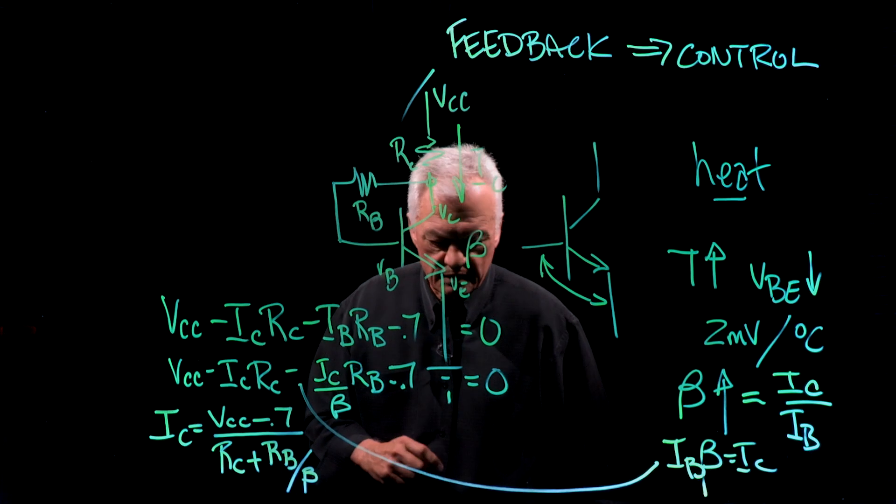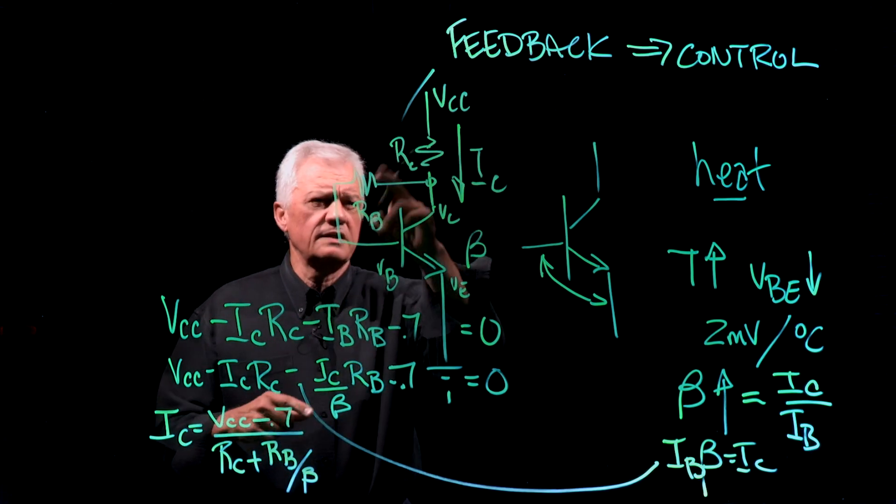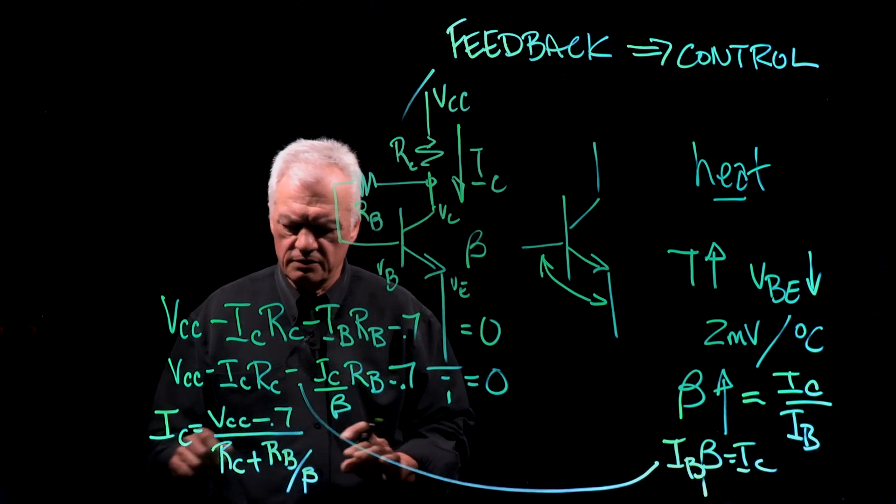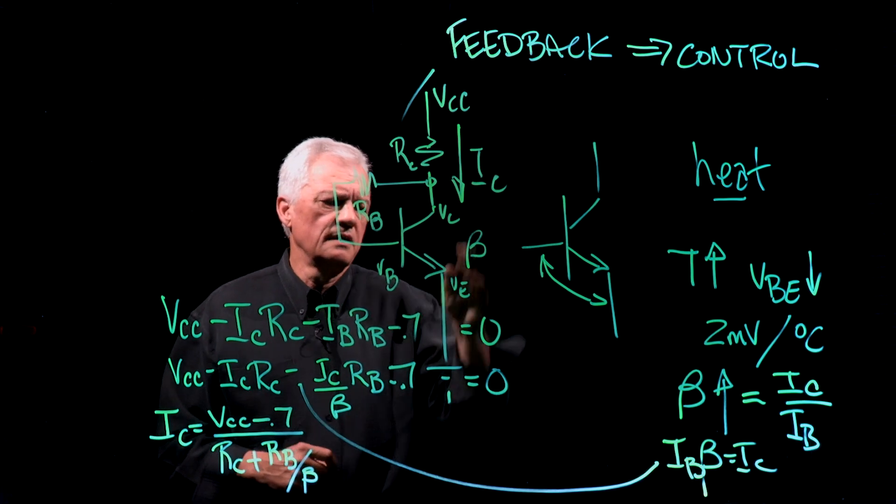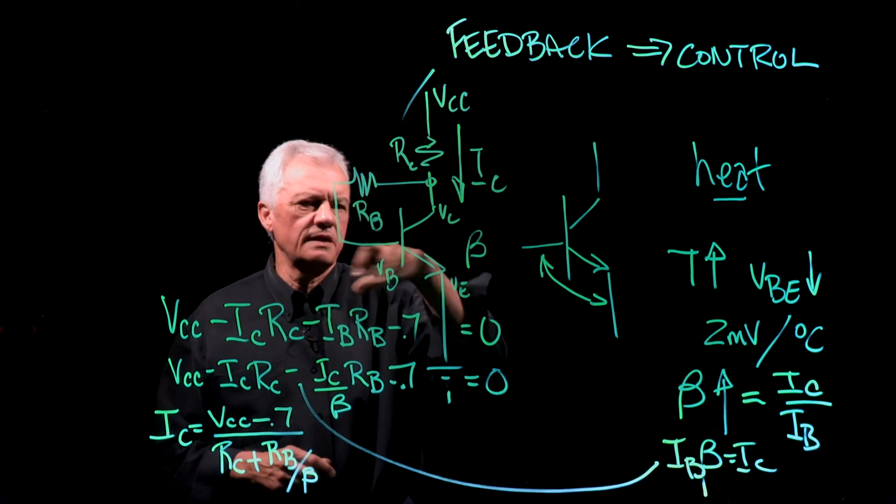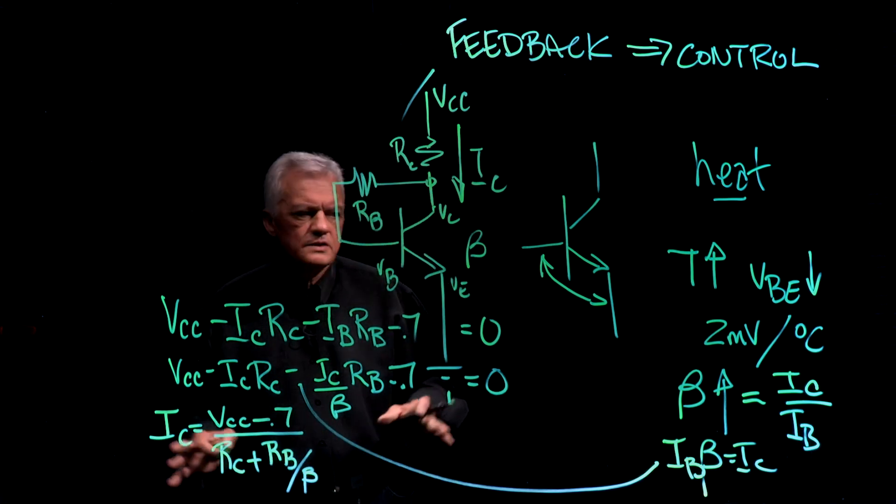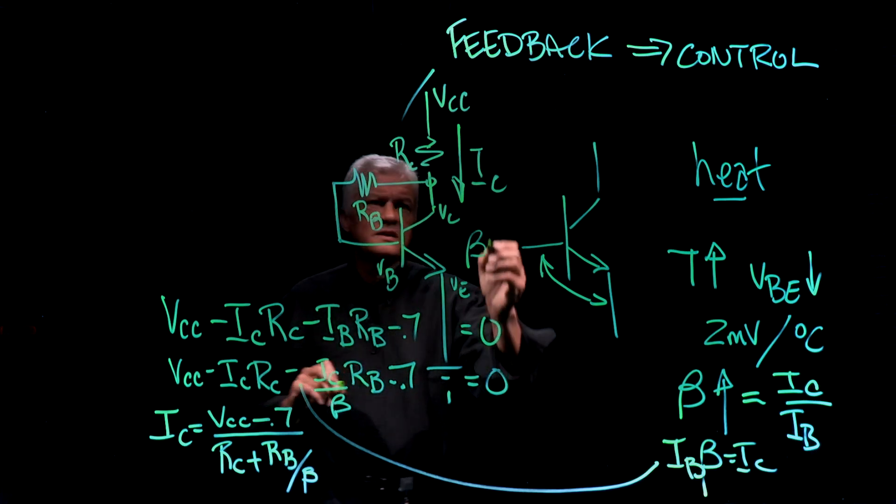So plugging some numbers in, we can, if I give you these numbers here, you can plug them in and you can actually have your collector current, okay? Similar to emitter current, divide by beta, you can figure out IB, et cetera. So that, the concept is here, is feedback.